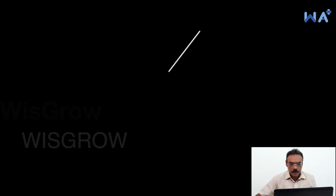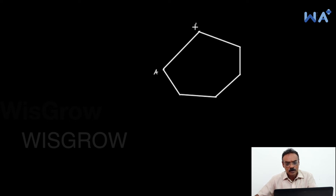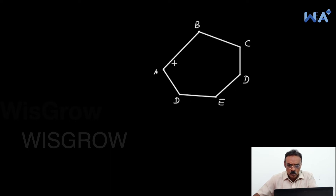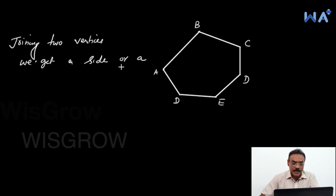But there is a polygon. Okay, this is the polygon. Joining two vertices — joining two vertices can give either a side or a diagonal. One side and one diagonal.